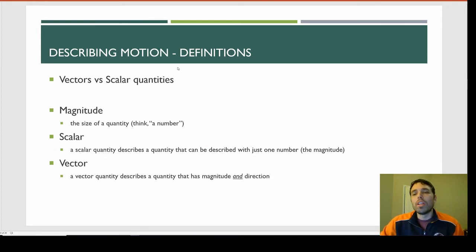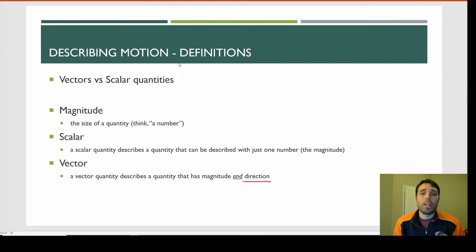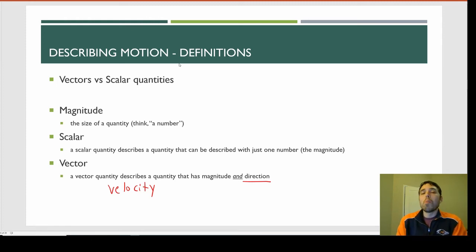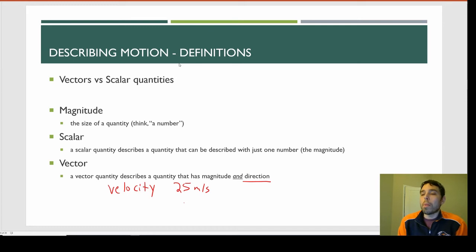Vectors are a little bit different. Vectors have magnitude, but they also have direction — and this is super important. One example of a vector from physics is velocity. If you tell me you're going 25 meters per second, that's actually not a vector, because it doesn't have direction — that's your speed. Speed is like velocity but without direction; speed is scalar. Velocity is a vector: it has speed and it has direction.